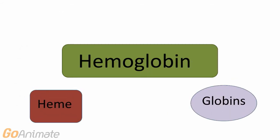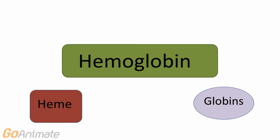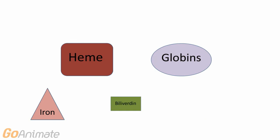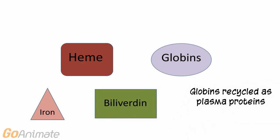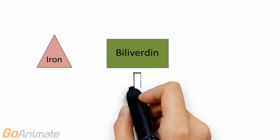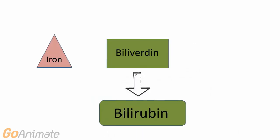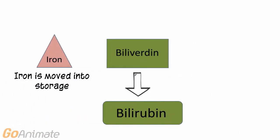There, hemoglobin is broken down into heme and globin components. Heme is further broken down into iron and biliverdin, a pigment. The globin portions are recycled as plasma proteins. The biliverdin is converted to bilirubin and excreted in the bile.